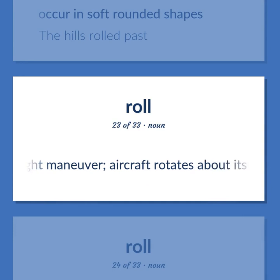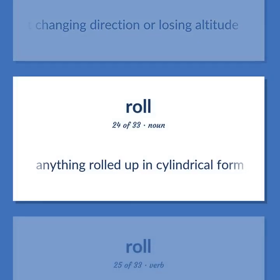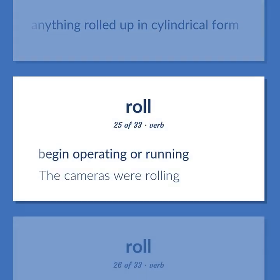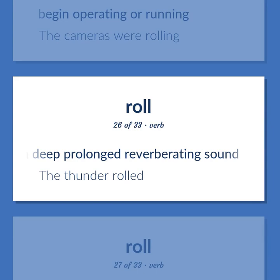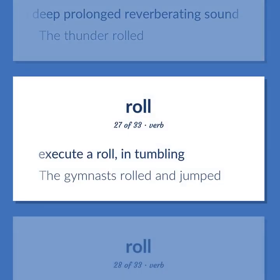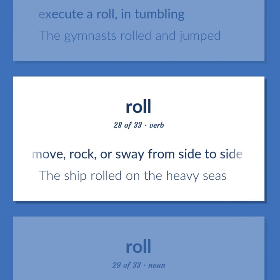Roll (continued): a flight maneuver — aircraft rotates about its longitudinal axis without changing direction or losing altitude. Anything rolled up in cylindrical form. Begin operating or running — the cameras were rolling. Emit, produce, or utter with a deep prolonged reverberating sound — the thunder rolled. Execute a roll in tumbling — the gymnasts rolled and jumped. Move, rock, or sway from side to side — the ship rolled on the heavy seas.